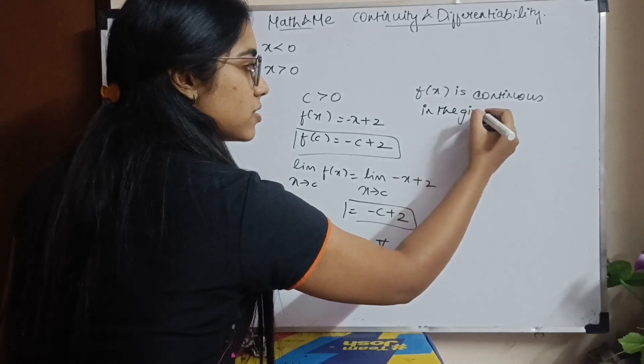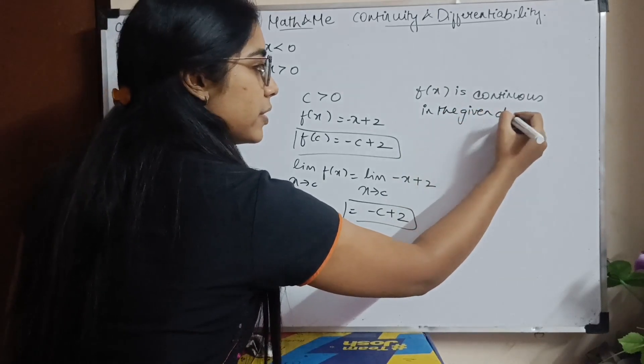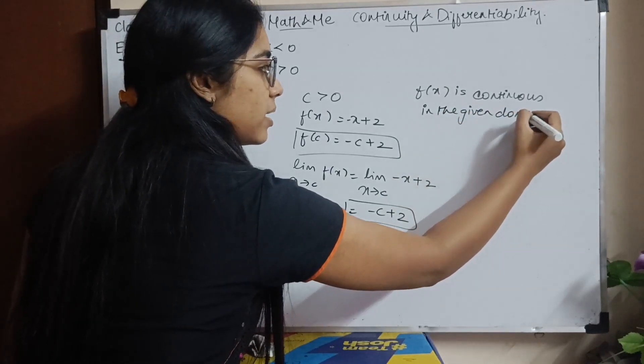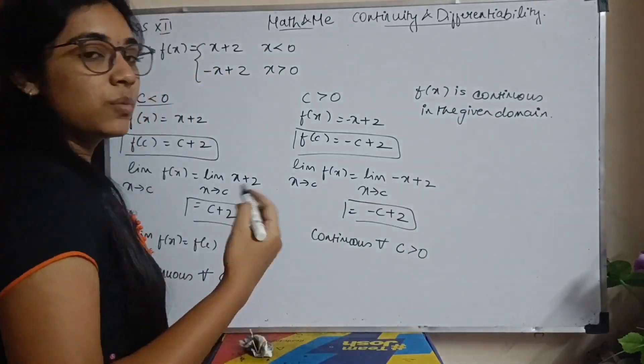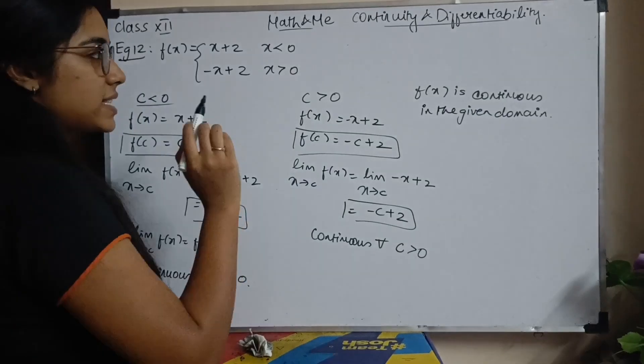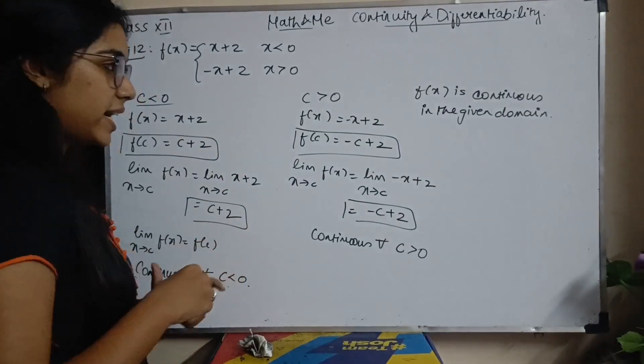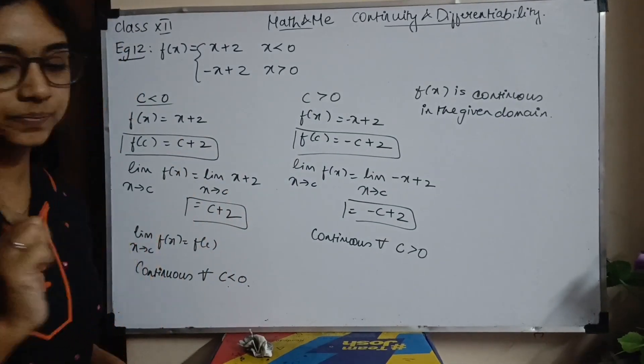If they had given some condition for 0 also, this condition would be true for all real numbers. We are not saying it is discontinuous at 0, nor are we saying it is continuous at 0 — we are not talking about the point 0 itself. We only know what happens for x less than 0 and x greater than 0. So f of x is continuous in the given domain — this is how you write your final answer.